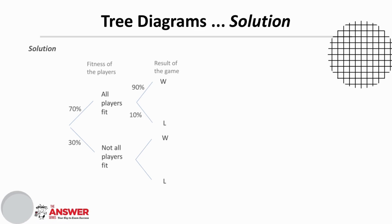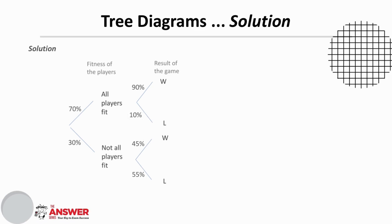When they are not fit, we are told the probability of them winning becomes 45%, so this is 45% and this is 55%. Again, each of these need to add up to 100%. Now that our tree diagram is complete, we can calculate the probability of them winning their next game by finding the pathways that involve them winning.